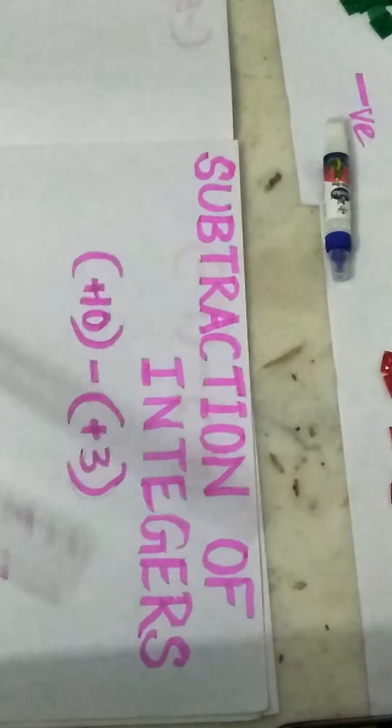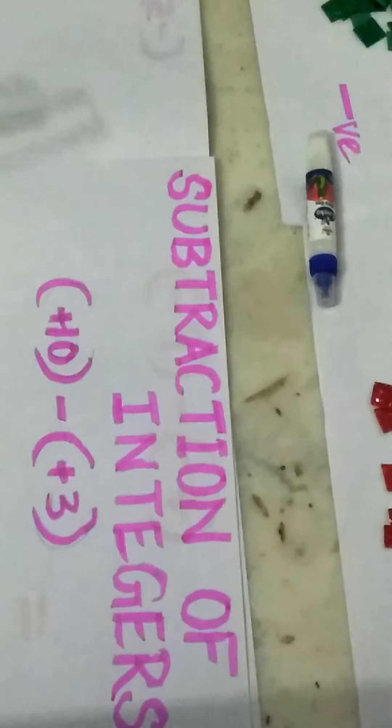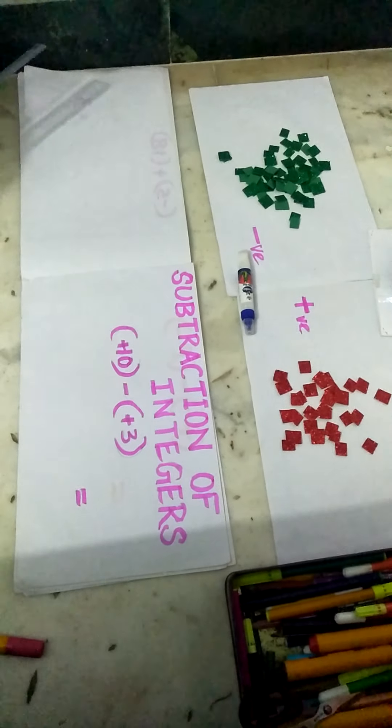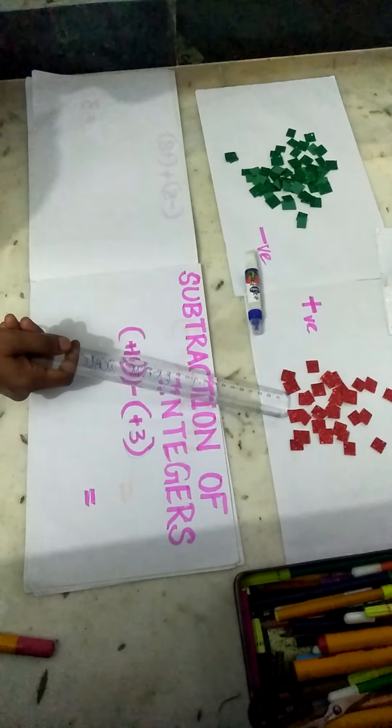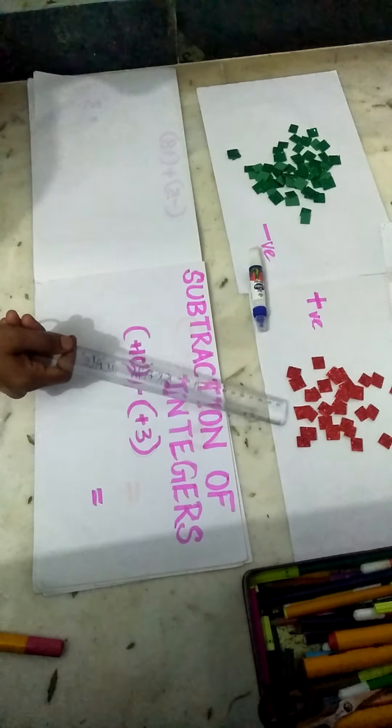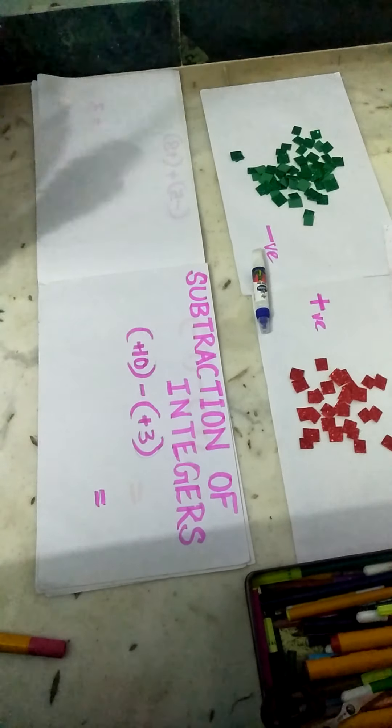Now we are going to learn subtraction of integers through an activity. To do this activity we need 4 to 5 plain sheets like this, and 2 colours of bindis or stickers or star stickers. Glittered foam sheets can also be used. Red colour represents positive, and green colour represents negative.